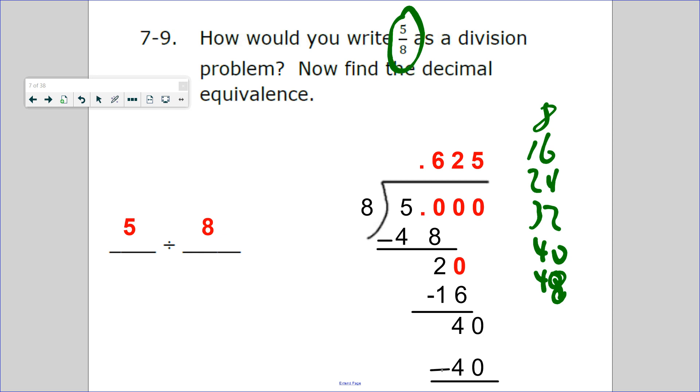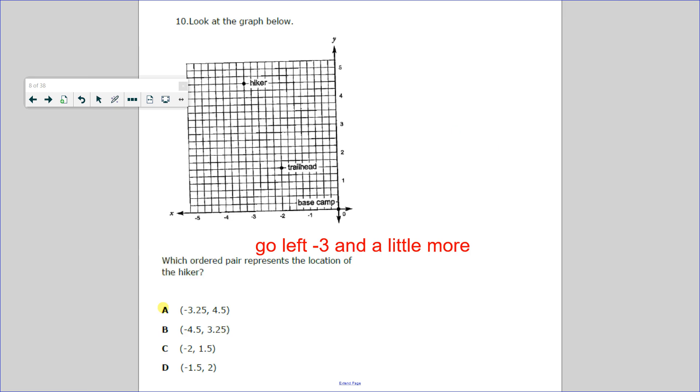Now how would you put it in here? 5 divided by 8. So as you keep on dividing, you see the decimal equivalency is 0.625. Number 10: you will have to know how to graph points. This is called the origin. Origin is like the home base. This is the x-axis, this is the y-axis.